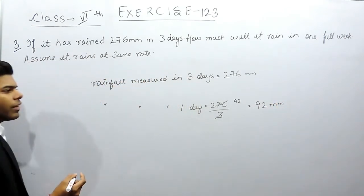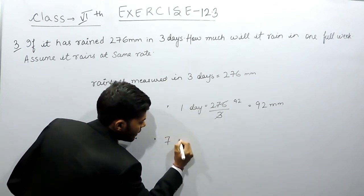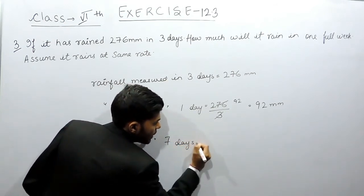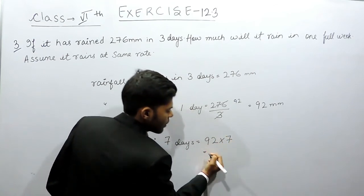So we have to find in one full week, that means 7 days. So rainfall measured in 7 days will be equals to 92 multiplied with 7.